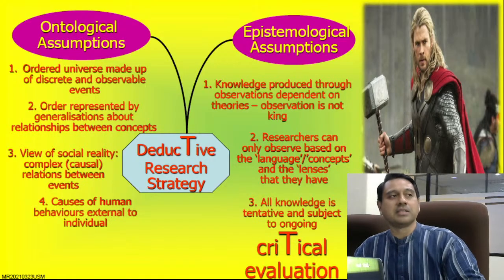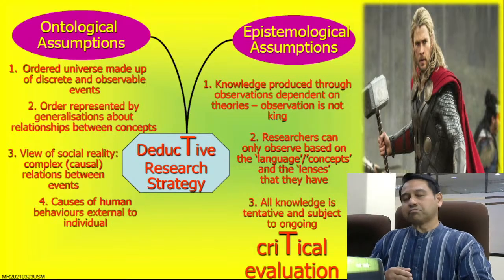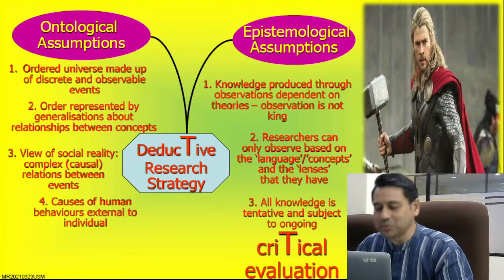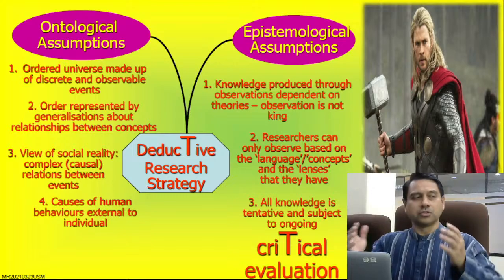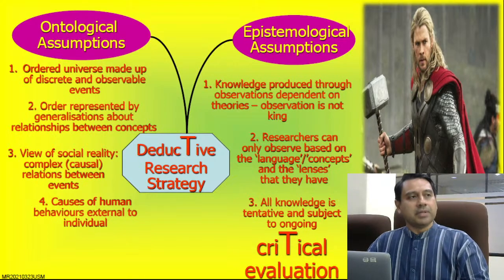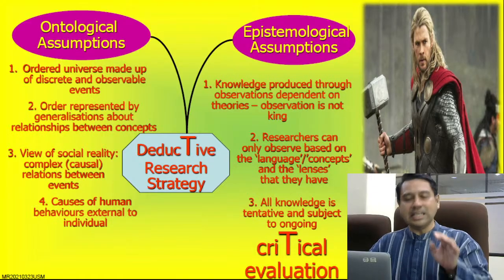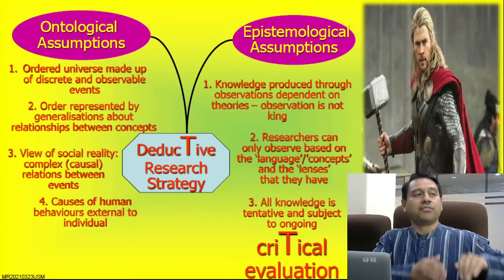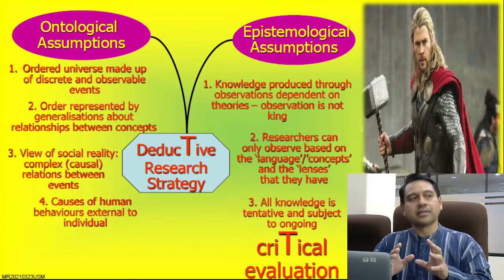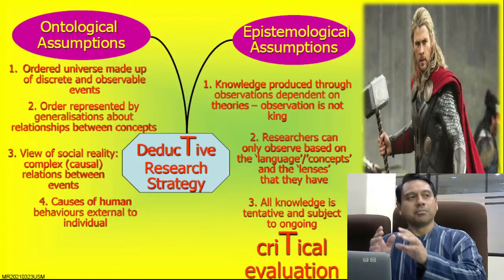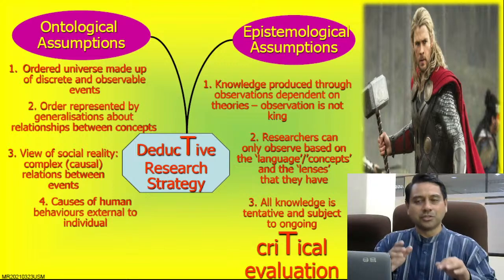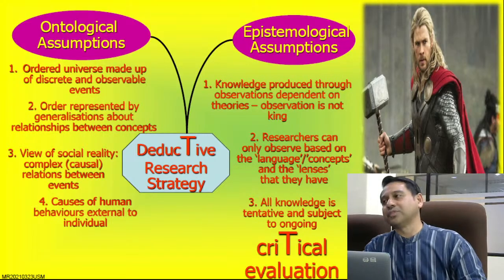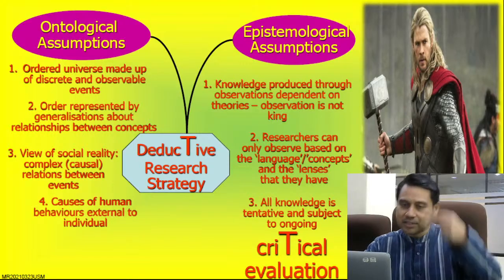All knowledge is tentative and subject to ongoing critical evaluation. Deductive research strategy doesn't subscribe to the idea of laws as total truth. We can only inch towards the truth — we can never know the total truth. What we can do is reject false theories, and whatever remains is considered as tentatively supported by evidence. You cannot prove a theory to be right; you can only prove it to be wrong, or say it is supported by evidence so far.